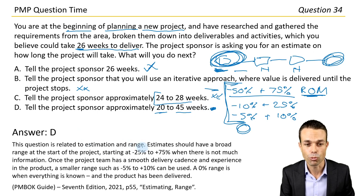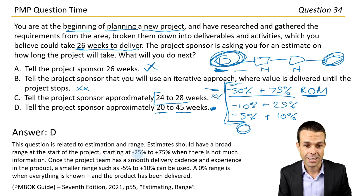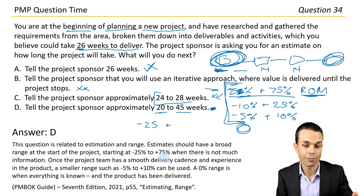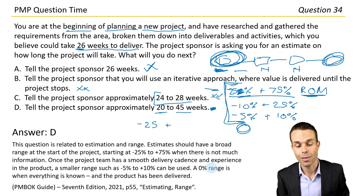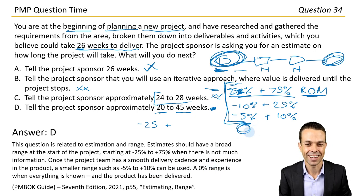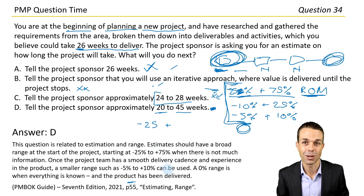This question is related to estimation and range. Estimates should have a broad range at the start of the project — starting at minus 25 to plus 75. That's good to know when there is not much information. Once the project team has a smooth delivery cadence and experience in the product, a smaller range such as minus 5 to plus 10% can be used. A 0% range is when everything is known and the product has been delivered. Page 55 under estimating and range in the PMBOK Guide 7th edition.